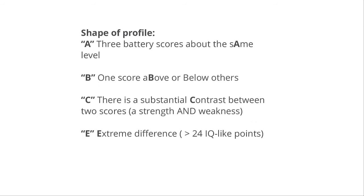Within that small number, students still have a profile. Regardless of what stanine a student falls in, they are also assigned a profile shape. A student with a 9A profile, for example, means the student's scores are consistent across all three batteries — a student with strong or exceptionally strong cognitive abilities across all areas. Theoretically, we would expect their academic achievement to be fairly consistent across all subject areas. A student can have an A profile in any stanine, including the second stanine, where they are consistent across all areas and interventions will be needed across all areas of learning.